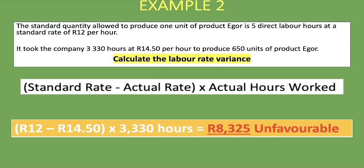The variance is unfavorable because the actual rate of 14 rand 50 exceeds the standard rate of 12 rand. Possible reasons include an unexpected increase in wages, hiring more skilled workers at higher pay, or employees working overtime at a higher rate than normal time.